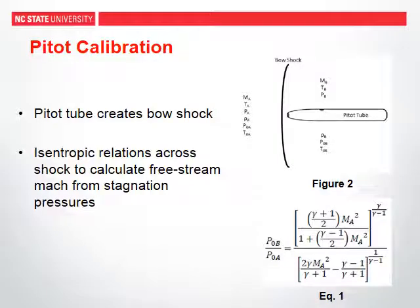The theory behind the pitot tube is that it will create a bow shock ahead of the pressure ports on it. This creates two separate sets of parameters both upstream and downstream of the shock wave, meaning that the total pressures and static pressures observed by the pitot tube are not the true pressures within the supersonic wind tunnel. Using isentropic relations between states A and B, we can take known values for the pitot pressure at B and the stagnation pressure at A to calculate the Mach number, which will be used for our calibration curves.